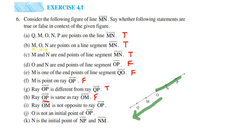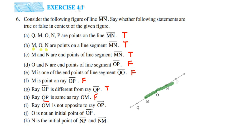The next statement is: ray OM is not the opposite ray of OP. Ray OM is here and ray OP is here. They are saying they are not opposite, but that is false — they are opposite. One goes this side and the other goes that side, so they are completely opposite. The answer is false.